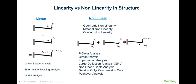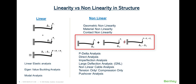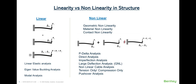Now let's see linearity and nonlinearity in a structure. On the left, you can see the cantilever beam where loads p1 and p2 are applied independently. If you add the responses delta 1 and delta 2, you get the same response as when both loads act simultaneously on the same cantilever. On the other hand, if this equality doesn't exist, then this is a nonlinear case. There are various types of nonlinearity in a structure: geometric nonlinearity, material nonlinearity, and contact nonlinearity.